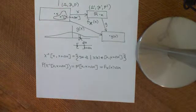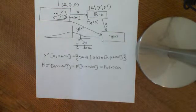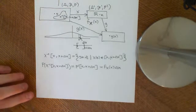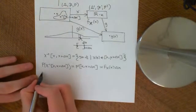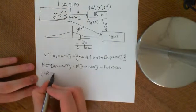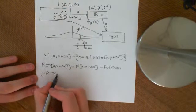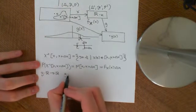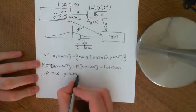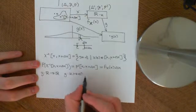In this video we are discussing how to transform probability density functions of random variables. Because it always helps to have a concrete example, let's imagine that this function g, which is mapping the real numbers onto the real numbers, is given by g mapping any real number onto the exponential of that real number.